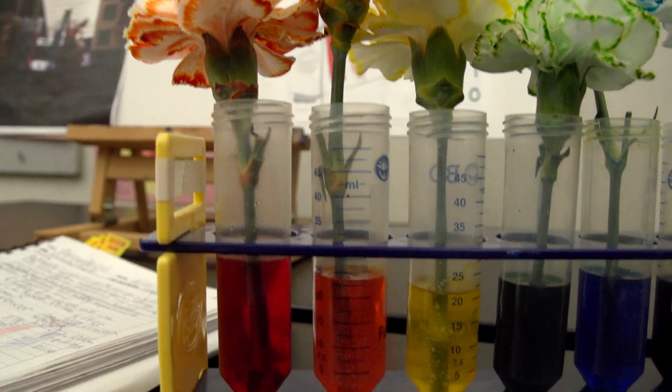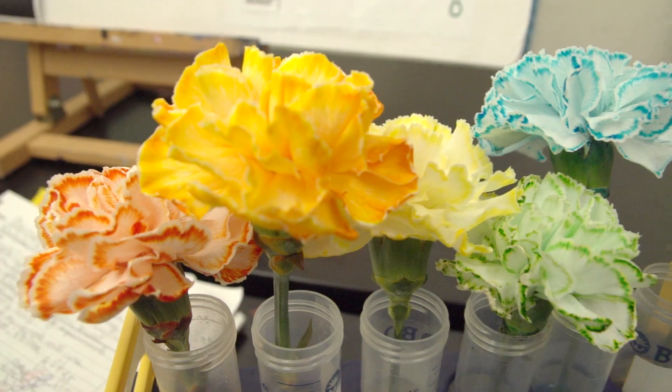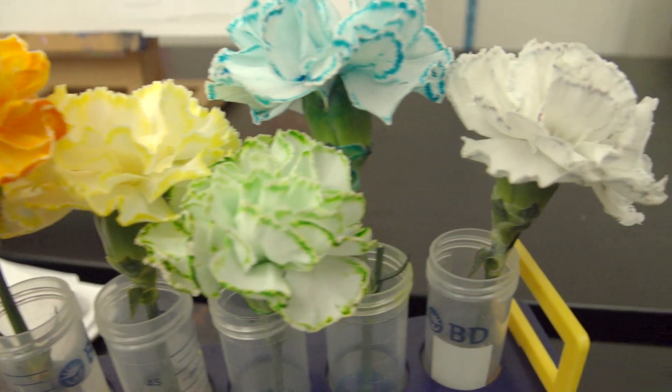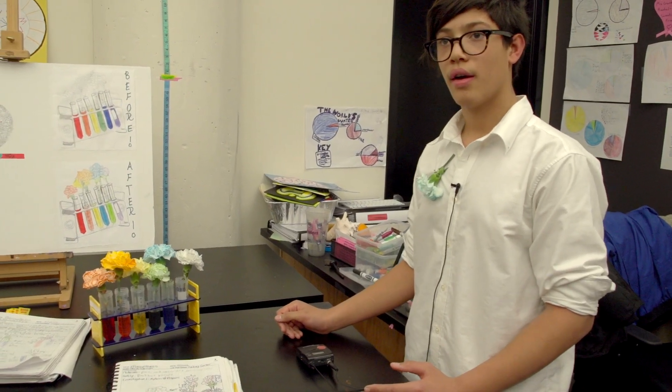Xylem is a plant organ almost inside of the stem. And it sucks up the nutrients in the water and then brings it up so photosynthesis can occur. And it's really important because without it, the plant would just dry up and die.